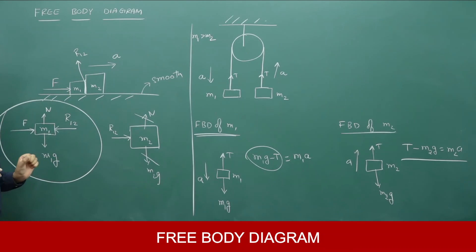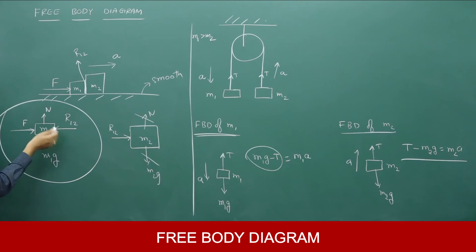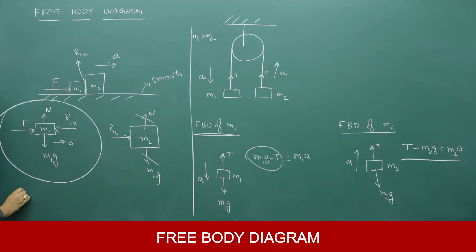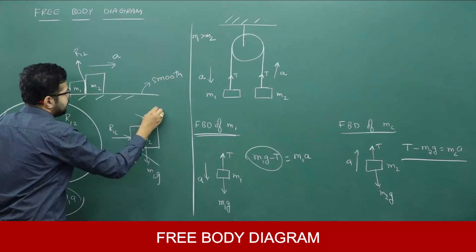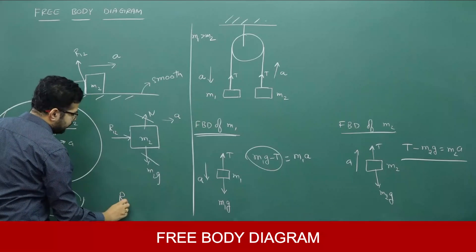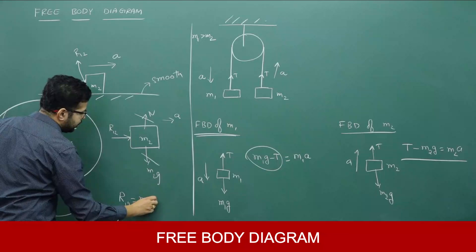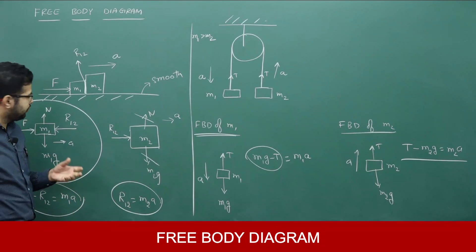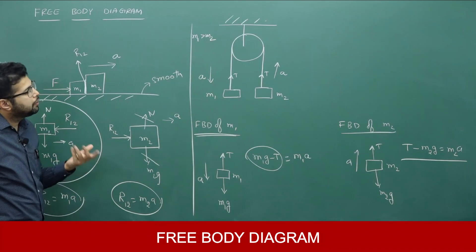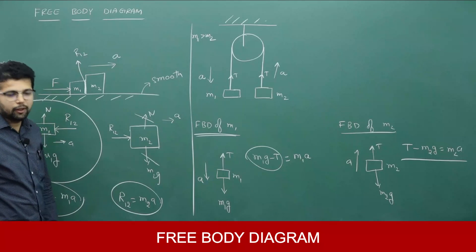This is a very important part to learn while drawing free body diagrams. Writing the equations: for m1, F − R12 = m1 × a. For m2, the only force acting is R12, so R12 = m2 × a. This is how we write free body diagrams. If you have clarity about how to draw free body diagrams, you can solve problems in laws of motion much better.